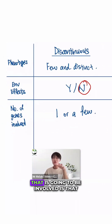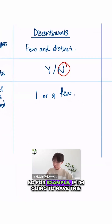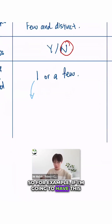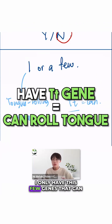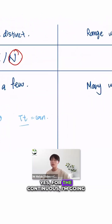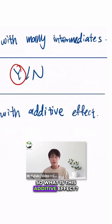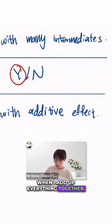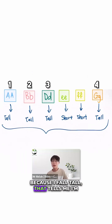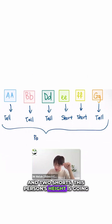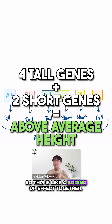For discontinuous, the number of genes involved is just one gene that is going to be determining it. For example, if I have this tongue rolling gene — if I have TT, I can only have a few outcomes. For continuous, I'm going to have many genes that have this additive effect. When I add up everything together, all of it will contribute — for example, four 'tall' alleles and two 'short' means this person's height is going to be above average. So this is like an adding-up effect together.